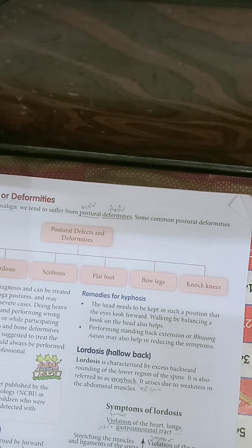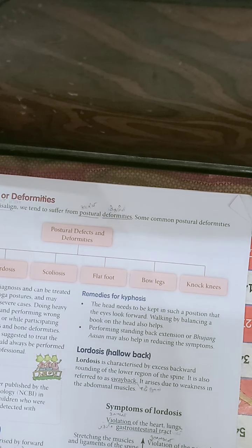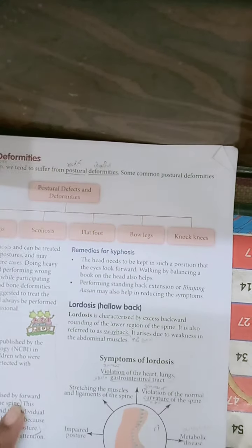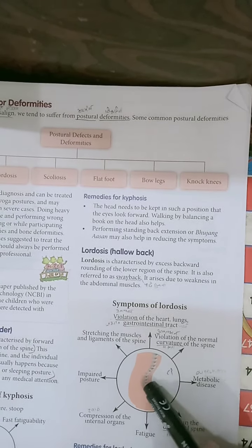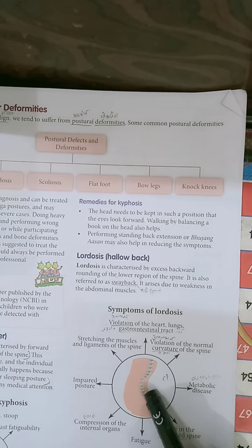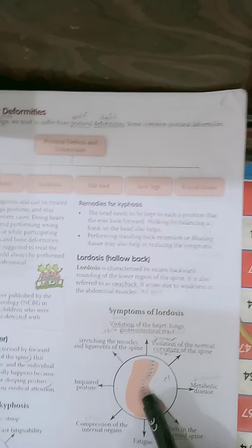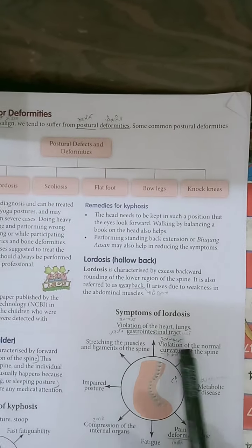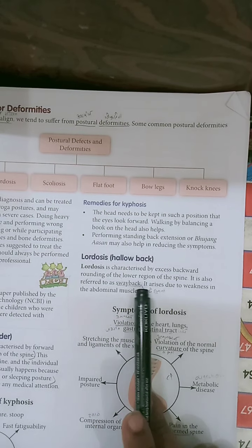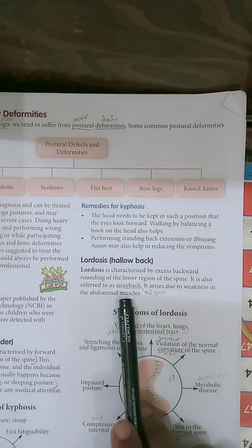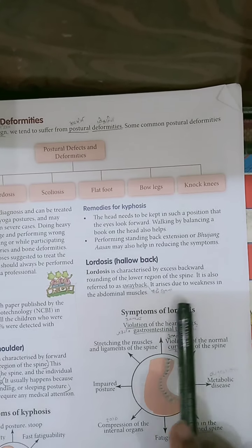The second posture defect is lordosis, also called hollow back. You can see in the image this portion of the back appears hollow. Lordosis refers to excessive inward curving of the lower region of the spine, also referred to as swayback.